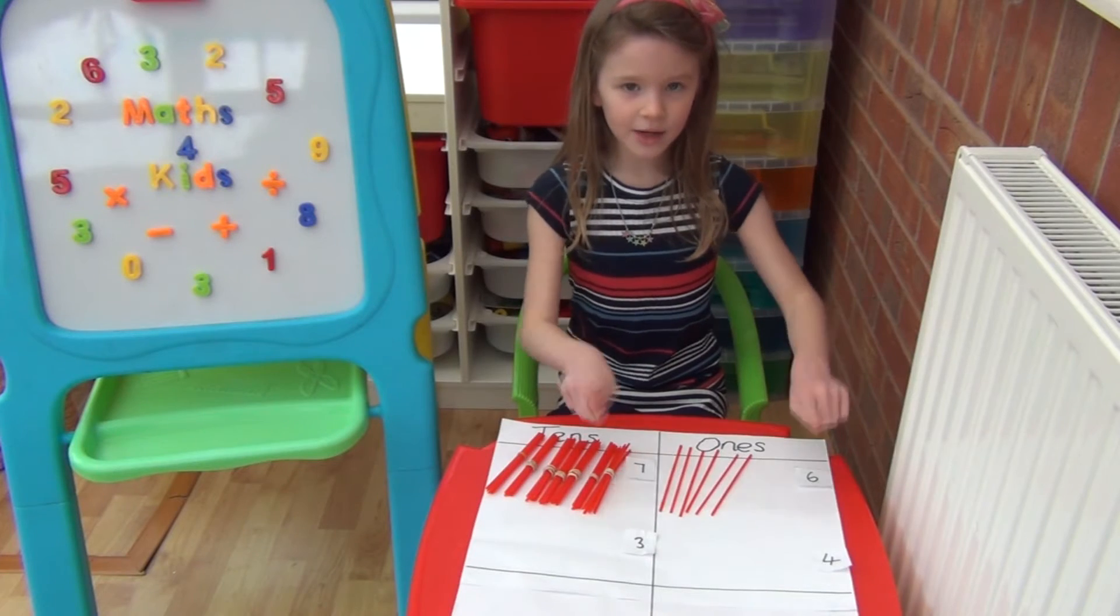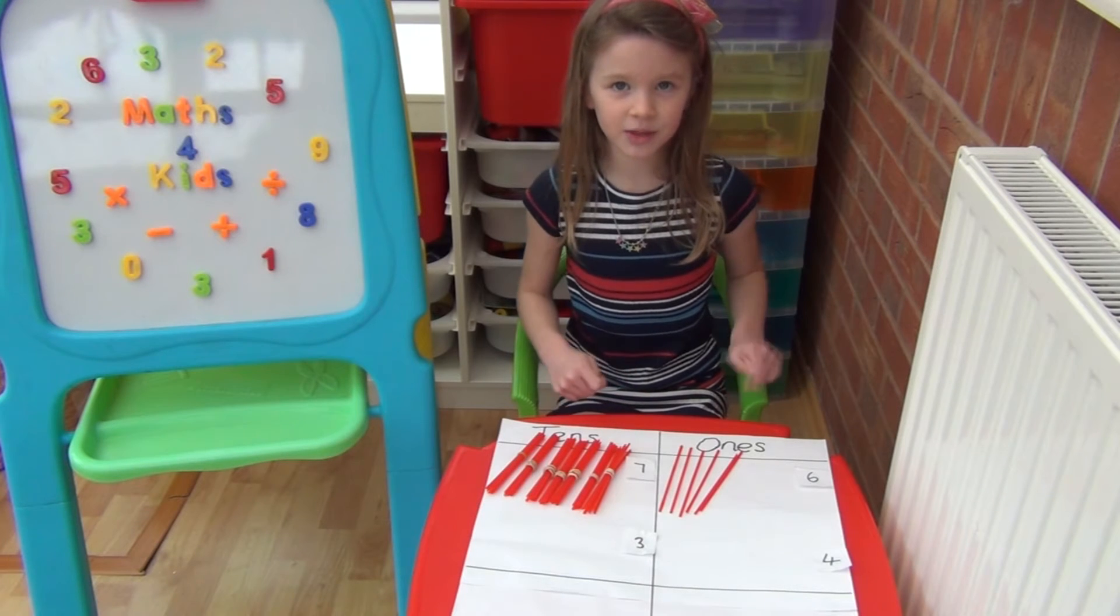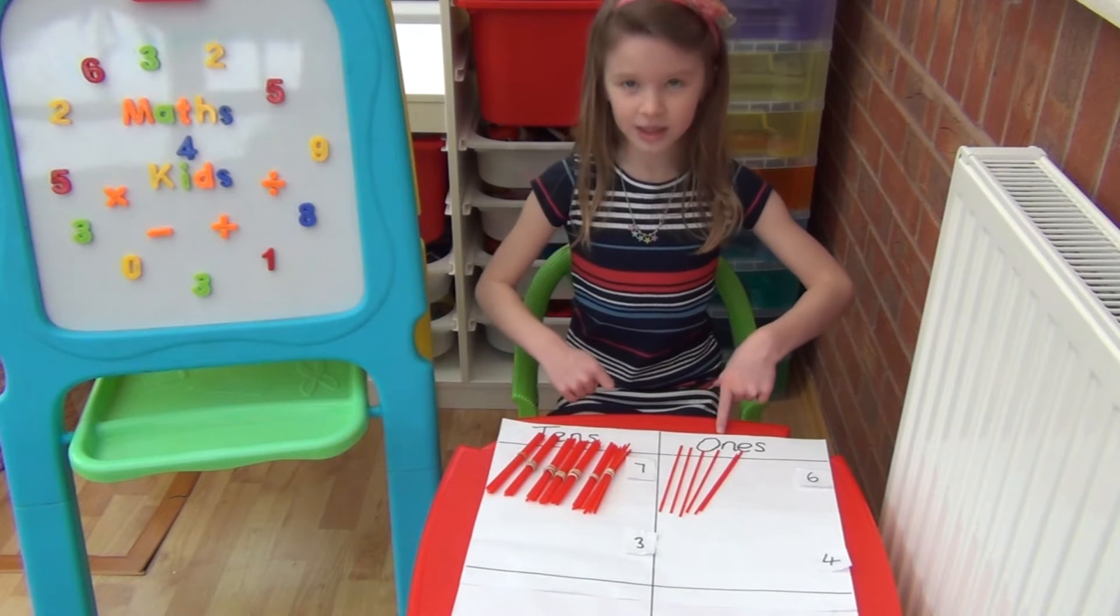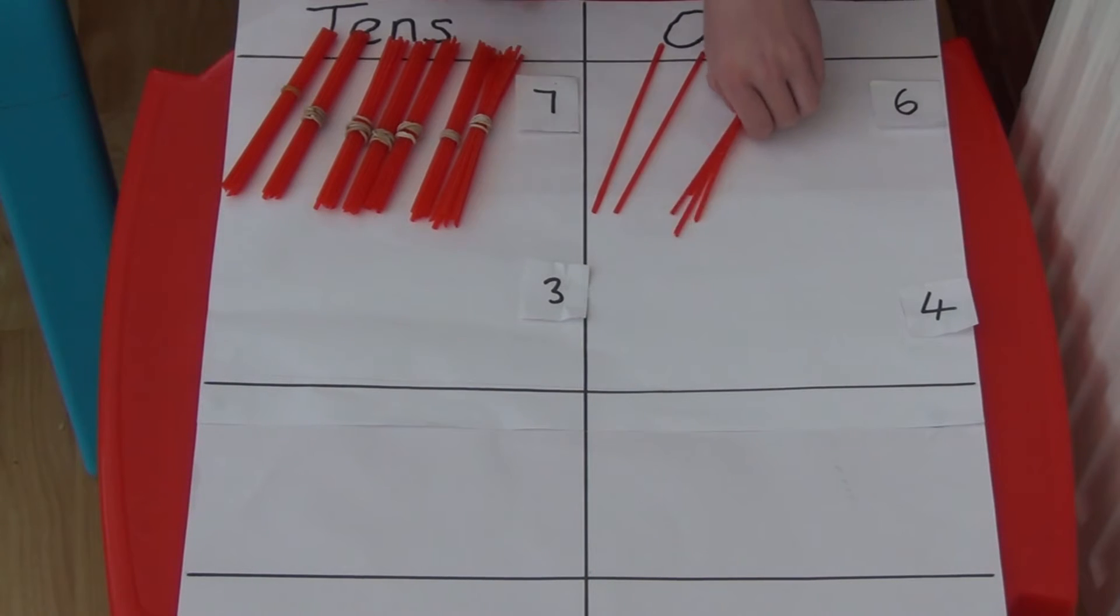I'm now going to take away the second number from the first number. When you do subtraction you always take away the ones first and then the tens. I need to subtract 4 from 6 so I'm going to take away 4 straws and bring what's left down into the answer box.